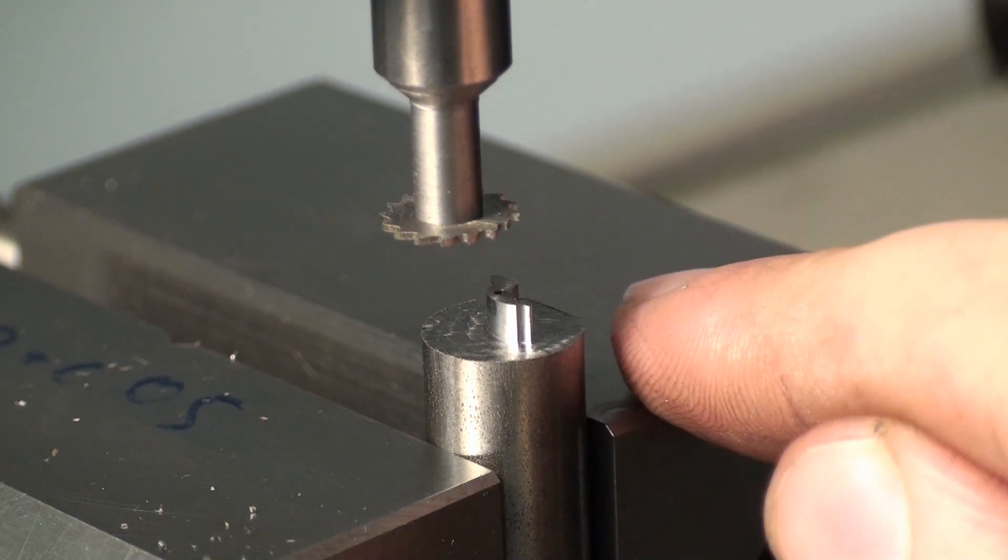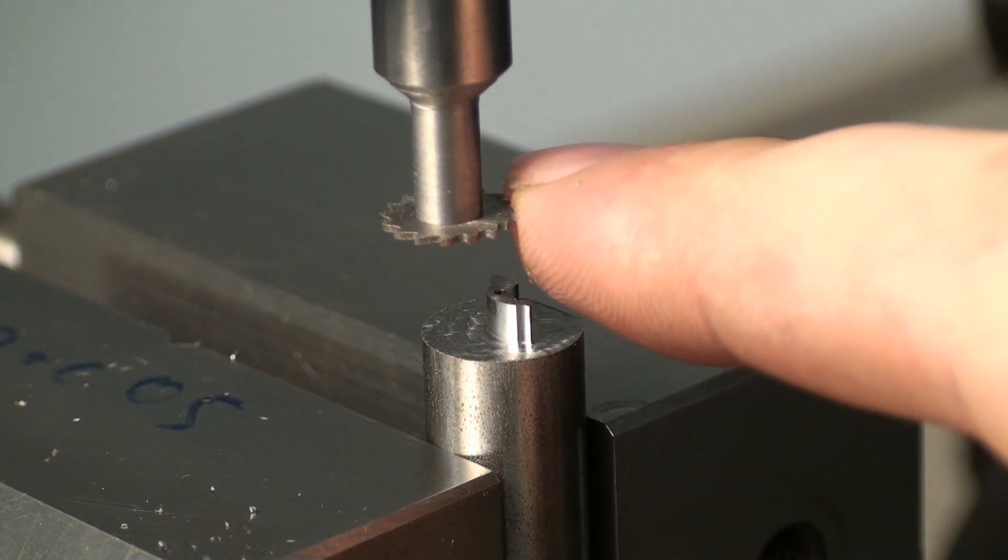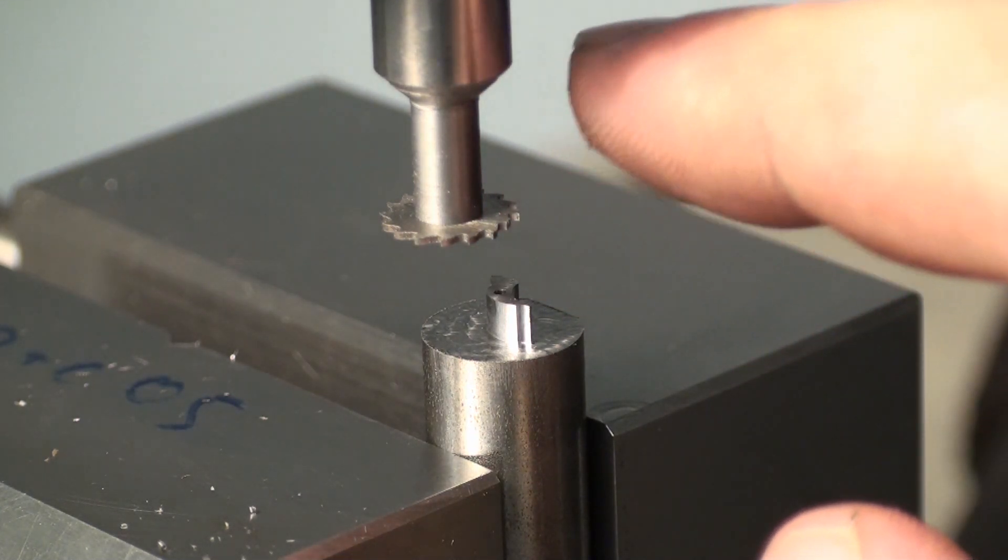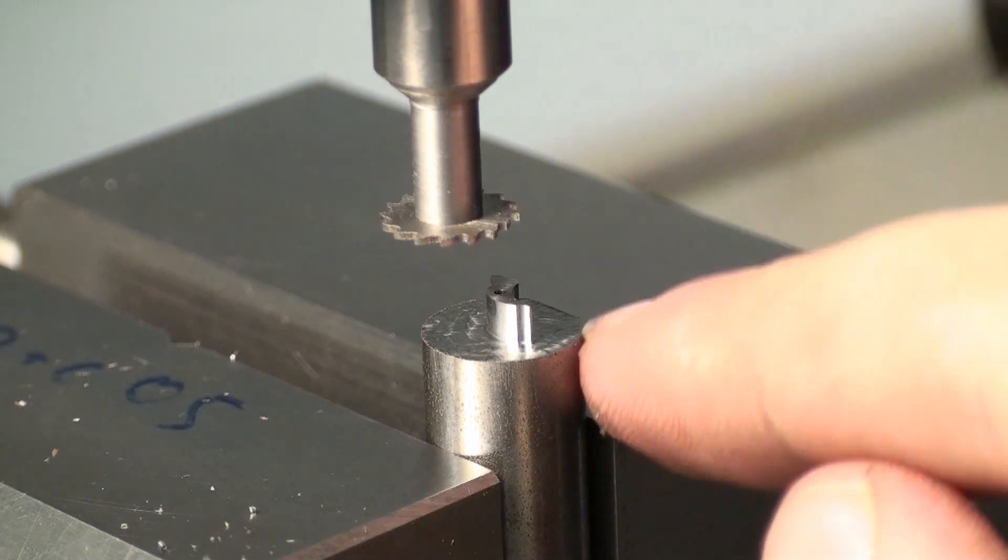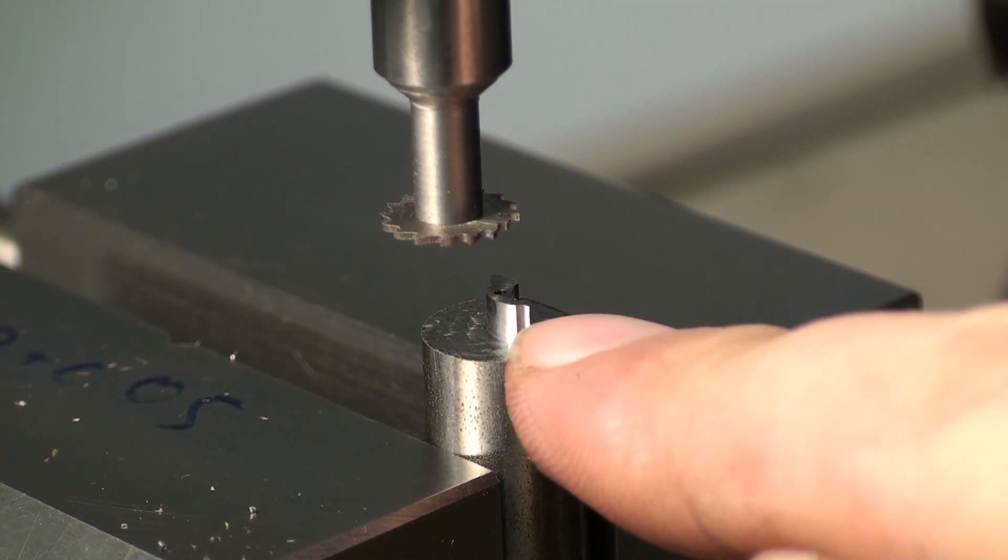The part is clamped in the vise, and we have a 10 millimeter, 0.6 millimeter thick slitting saw on an arbor in the collet chuck. We're going to cut the slot in this.